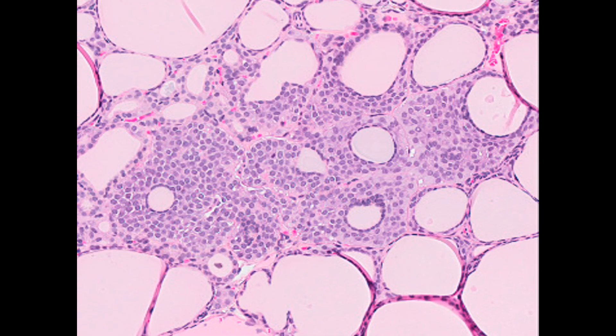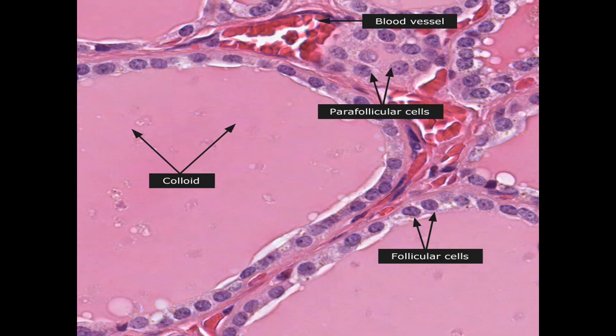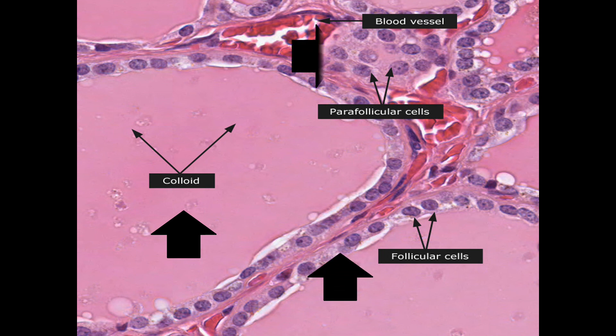This picture shows the follicular cells which stain more intensely, the colloid, and the parafollicular cells which stain less intensely. Another picture also shows the colloid, the follicular cells, and the parafollicular cells.